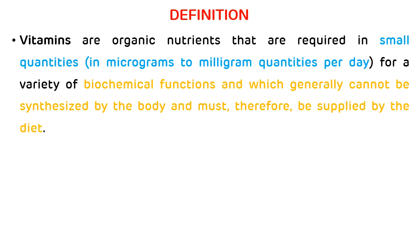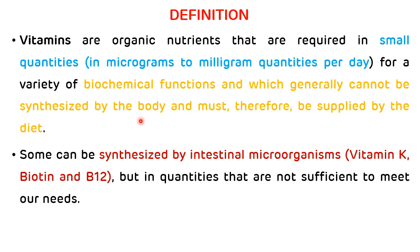Definition of vitamins: vitamins are organic nutrients that are required in small quantities for a variety of biochemical functions and for the growth of the body, and which generally cannot be synthesized by the body and must therefore be supplied by the diet. Some can be synthesized by intestinal microorganisms, such as vitamin K, biotin, and vitamin B12.